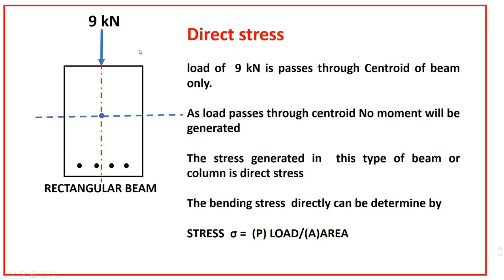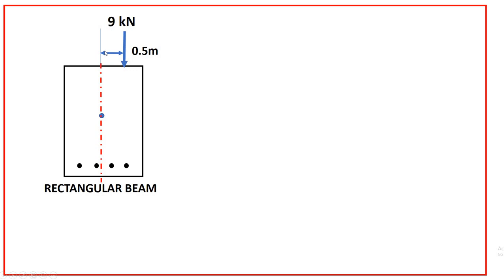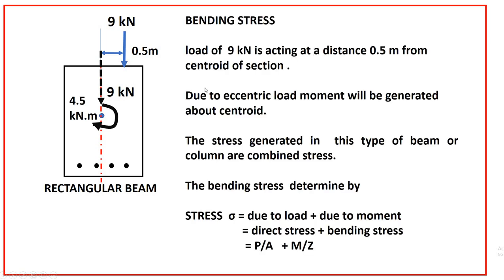Now, what about the bending stress? This load is not passing through the centroid — it has an eccentricity of 0.5 meters from the centroid. So how is this load transferred to the centroid? We have 9 kilonewtons and a moment of 9 × 0.5 = 4.5 kilonewton-meters, acting clockwise about the centroid.